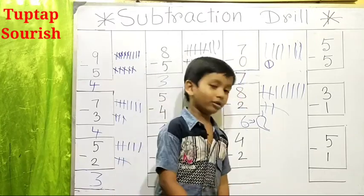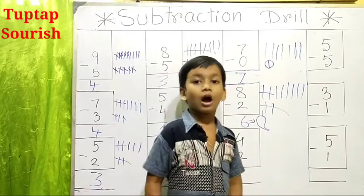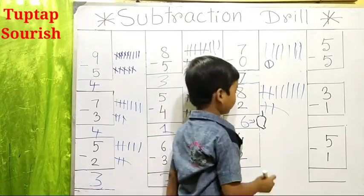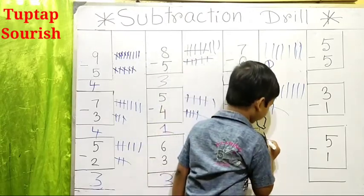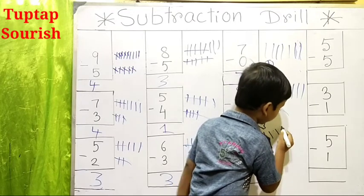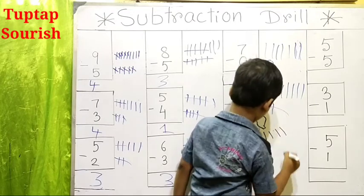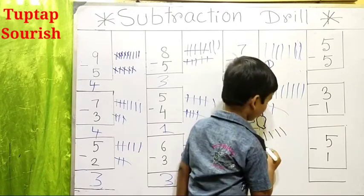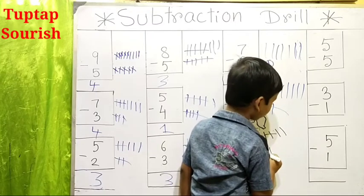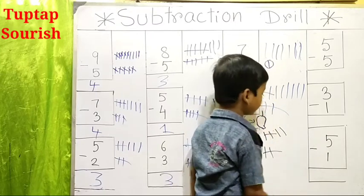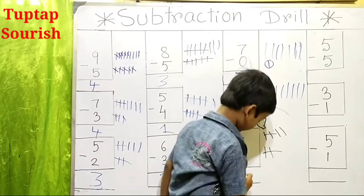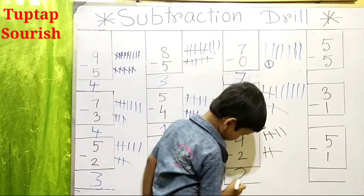So how many boys left? How many left? Let's see. One, two, three, four. One, two — cut, cut. The left two boys.